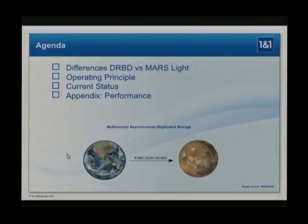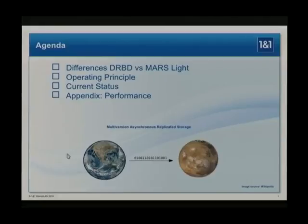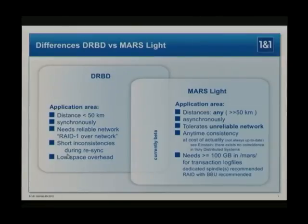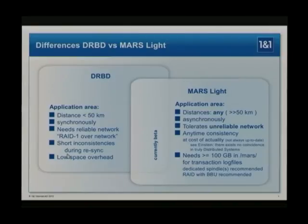Can you imagine what it means to replicate to a planet Mars? The current implementation will not do it because TCP protocol will not work over such a distance, but the basic architecture and principle of MARS is designed to do that. This is a kind of specification. DRBD is a kind of RAID-1 over network, meaning distance is limited — in practice about 50 kilometers. The network latency will lead to performance problems if you exceed it. The most important difference is that MARS works asynchronously and therefore supports arbitrary distances.